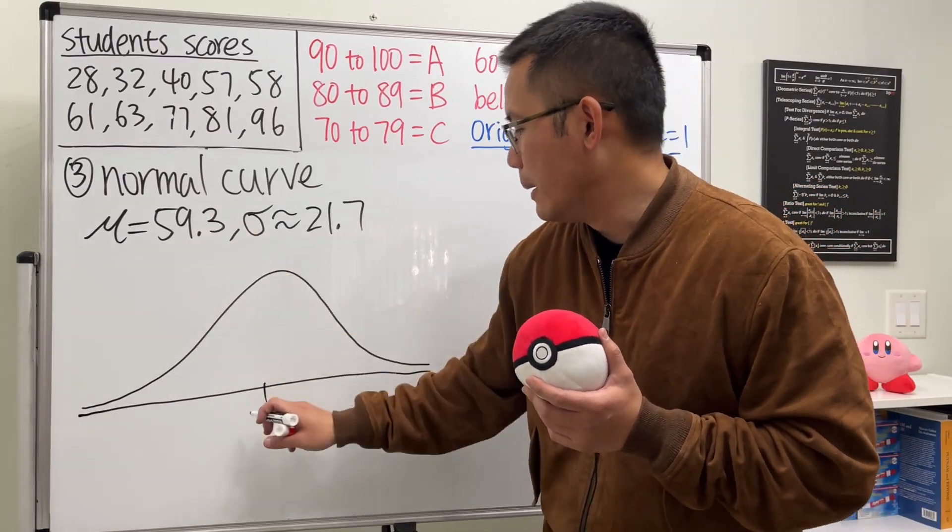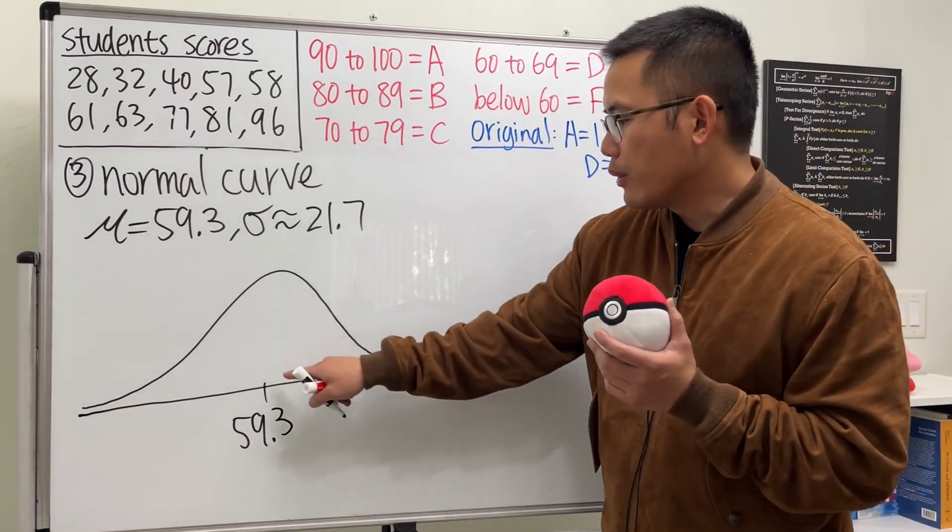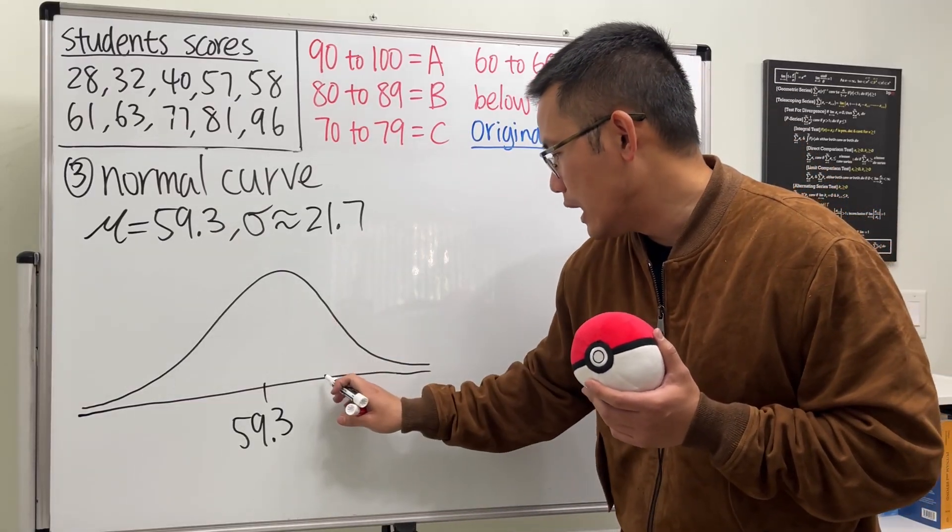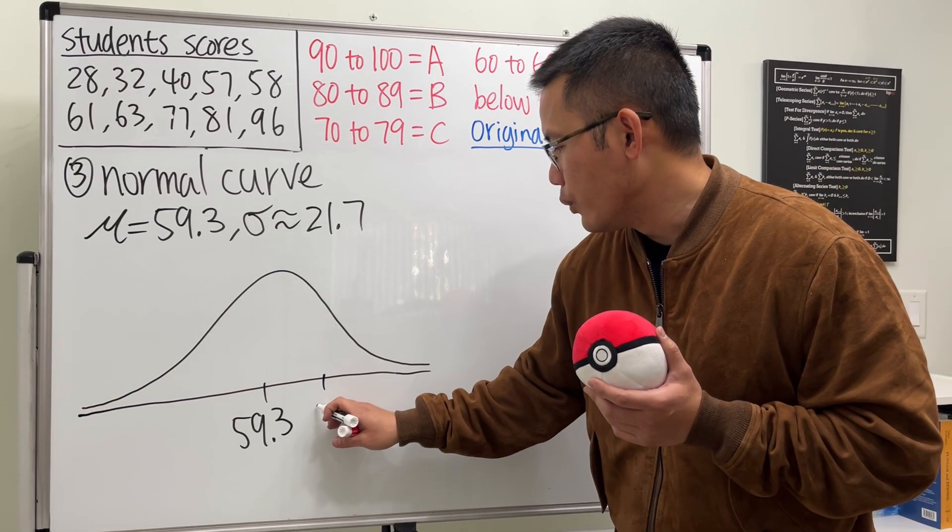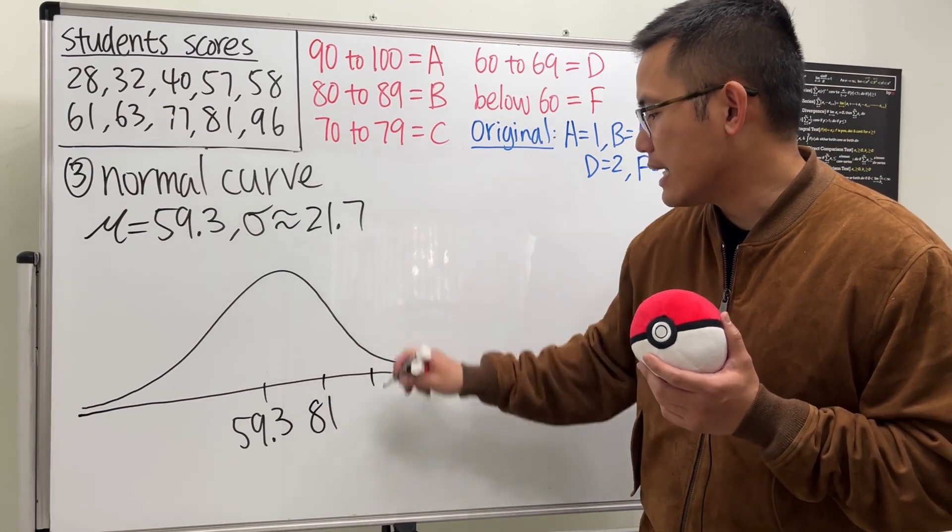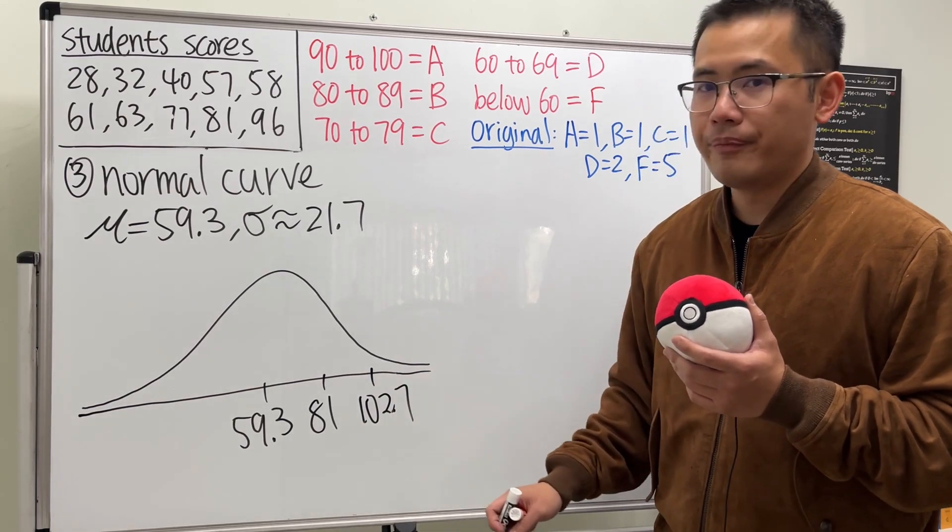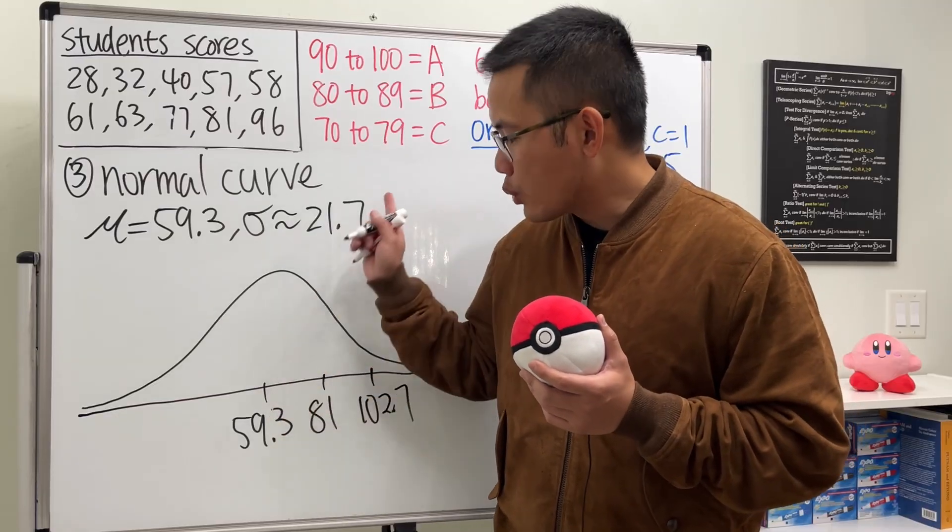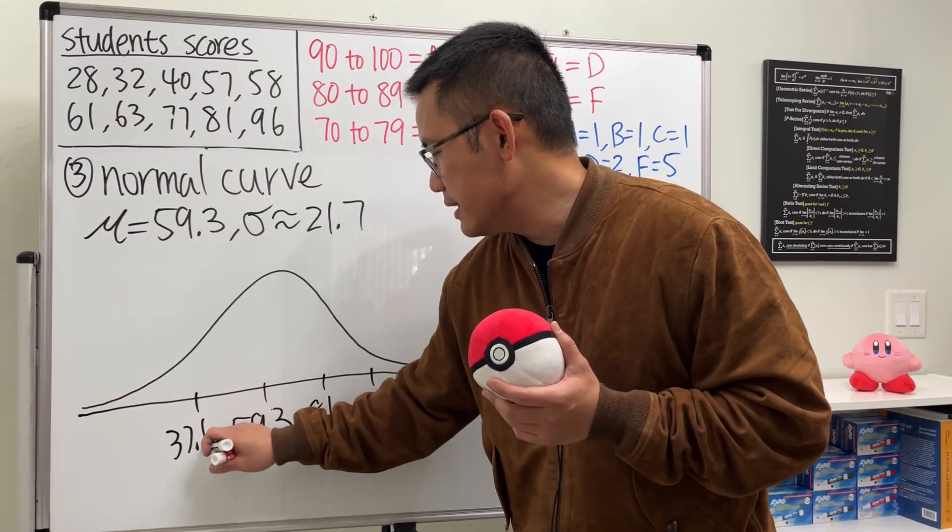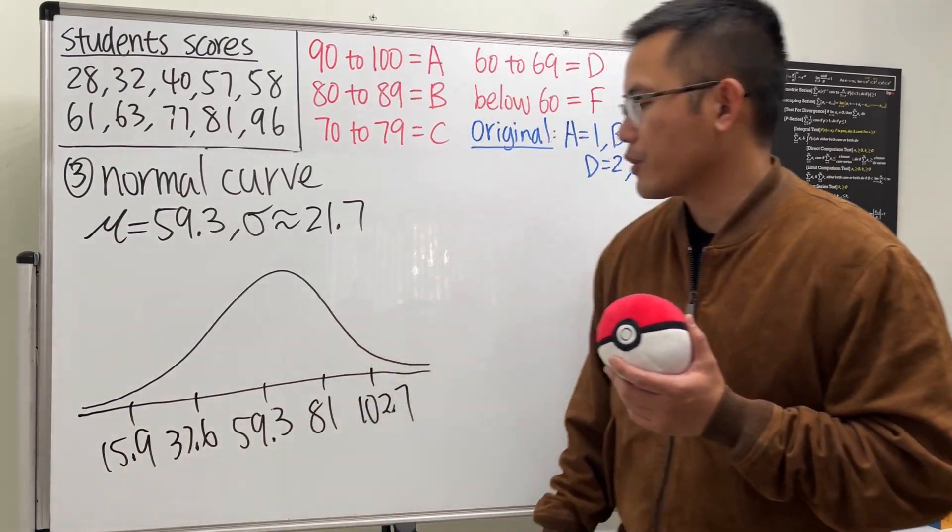If you guys want to see how to compute this standard deviation by hand, just leave the comment down below and let me know. But anyway, how can we utilize this and that to help us assign grades for the students? Let's go ahead and draw the normal curve, which is just like a bell-shaped curve. And as we can see, this is symmetrical. Right in the middle, this is where the mean is, which is 59.3. And we are going to just go from the mean and then we are going to add one standard deviation. So you do this plus that, and we will get 81. And then let's just go ahead and do it again. So this plus that, we will get 102.7. And of course, start from the mean and then subtract one standard deviation. We are going to get 37.6. And then do it one more time. We will get 15.9.